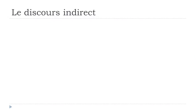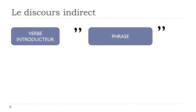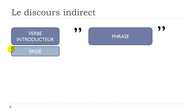Of course, it's French, so we have to think about when the introducer verb is in the past. When I write 'past,' it could be imparfait, passé composé, passé simple — all the past tenses we've seen so far. If this first verb is in the past, then the rest of the structure will have to be modified when you put it into discours indirect. That's what we'll see in this video. For all examples, I'll put the first part at the passé composé.